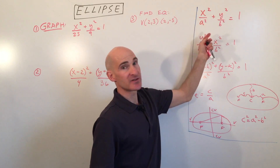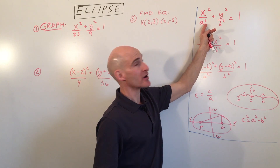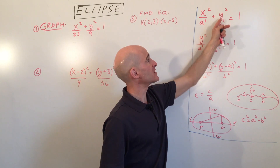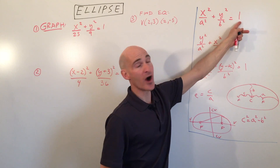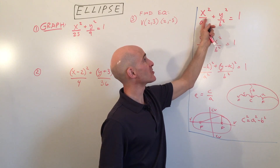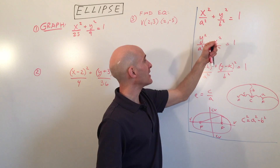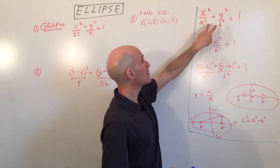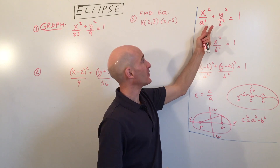The standard form of an ellipse is x squared over a squared plus y squared over b squared equals 1. It always equals 1, and these terms are always added. The a squared and the b squared can be switched.